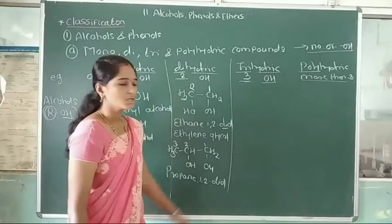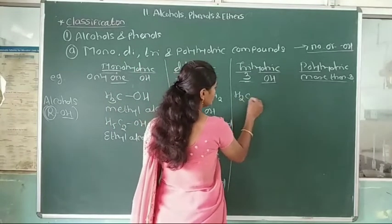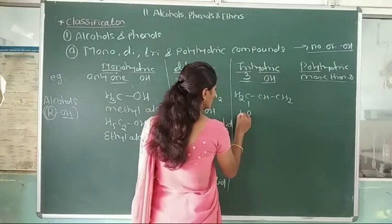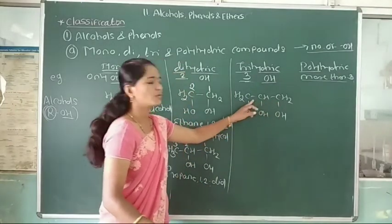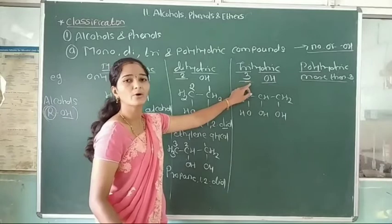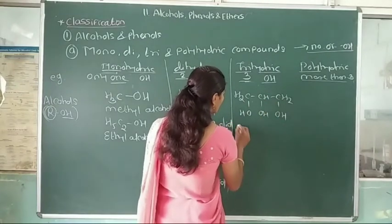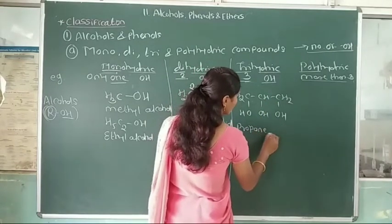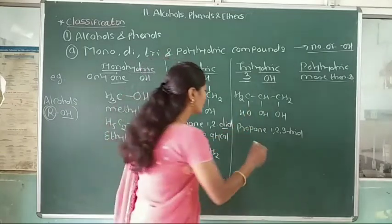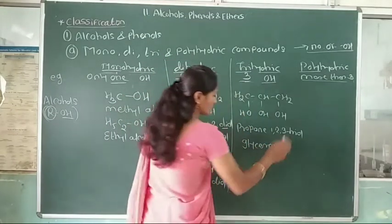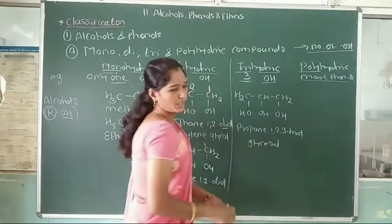Third, trihydric compounds. In trihydric compounds, three hydroxy groups are attached to three different carbon atoms, like CH2OH–CHOH–CH2OH with OH, OH, and OH groups. Name of this compound is propane-1,2,3-triol, also called glycerol.